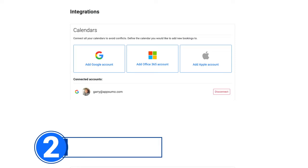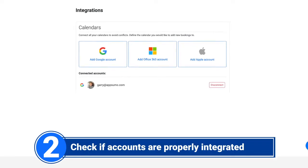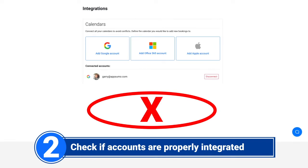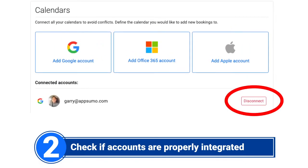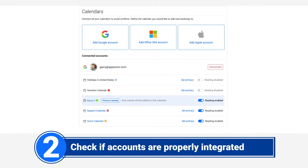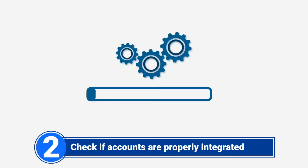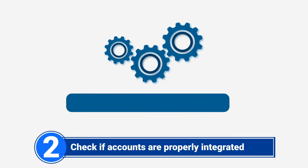Number 2: Check if your Google, Microsoft, or Apple accounts are properly integrated. If your account has been integrated but no calendar appears below it, it needs to be refreshed. To refresh, disconnect your integrated account and reconnect it. Once your calendars appear below the account, set your preferred calendars for reading and set one as the primary calendar.